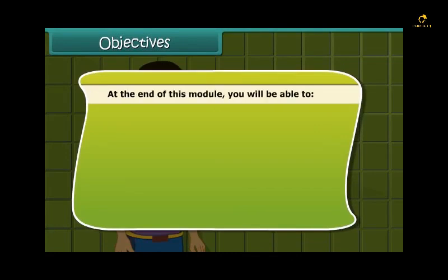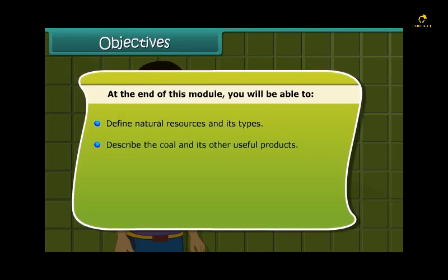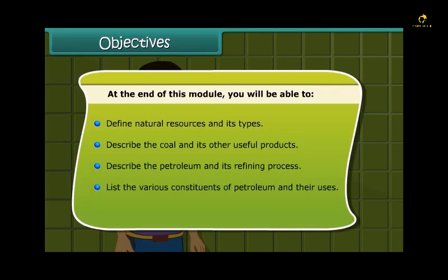At the end of this module, you will be able to: define natural resources and its types; describe coal and its other useful products; describe petroleum and its refining process; list the various constituents of petroleum and their uses; and describe natural gas and its importance.